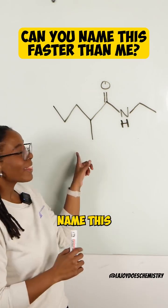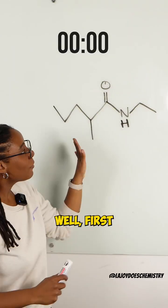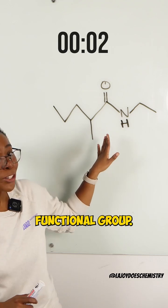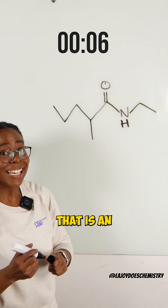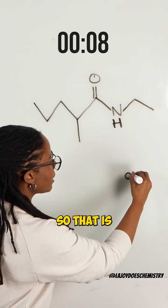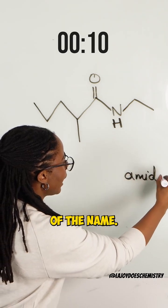How quickly can you name this organic compound? First, I'll draw my attention to the functional group - this C double bond O to an N - that is an amide group, so that is going to take the end of the name.